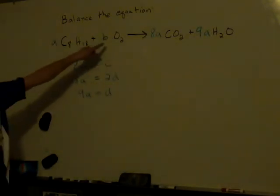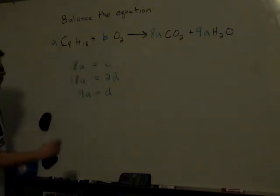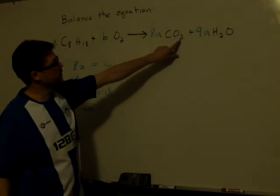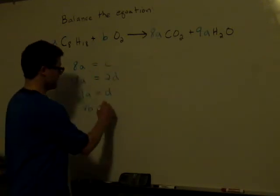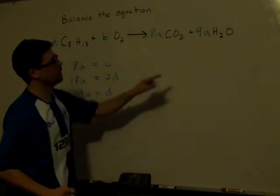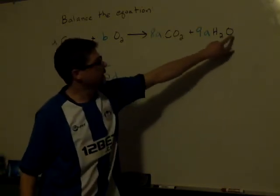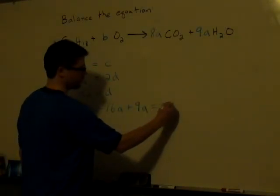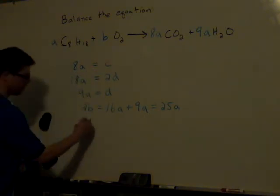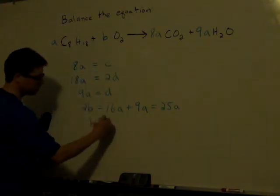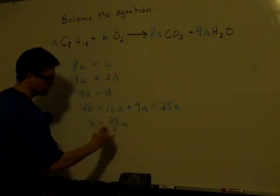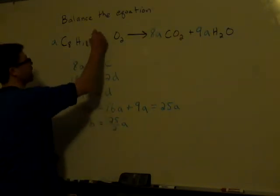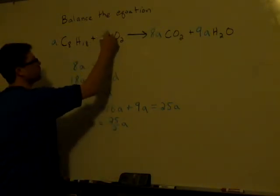Alright, next we have oxygen. On this side of the equation I have 2 times B oxygens. That means on this side of the equation I have 2 times 8A, that's 16A, plus 1 times 9A, plus 9A. And that is 25A. That means B is equal to 25 over 2 times A. So up here where I see a B, I'm going to replace that by 25 over 2 times A.